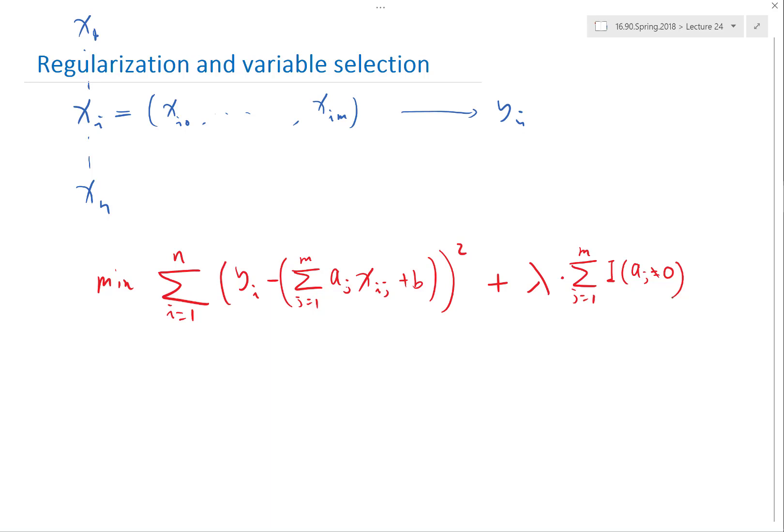What does that summation mean? Can somebody summarize what does that summation mean in English? That's something you've seen in Monte Carlo methods. What is the summation of an indicator function? The number, right. The number of j's that satisfy that condition.